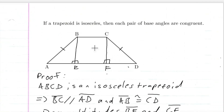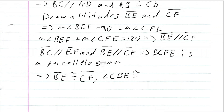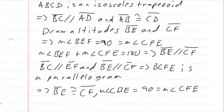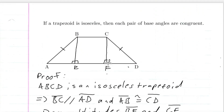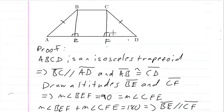We also know that this angle is congruent to that angle — angle CBE is congruent to angle CFE — since the measure of angle CBE is equal to 90, which is equal to the measure of angle CFE. And the measure of angle BEA is equal to 90, which is equal to the measure of angle BCF.